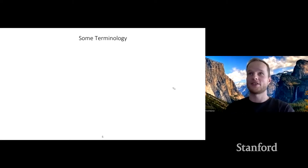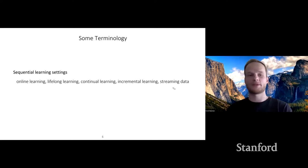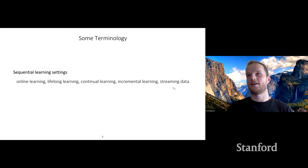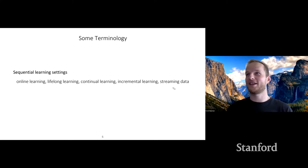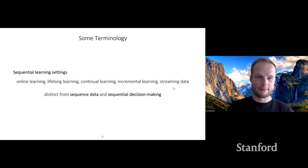Before the exercise, let me introduce some terminology. We'll be concerned with sequential learning settings, referred to with different names: online learning, lifelong learning, continual learning, incremental learning, and streaming data. They often mean slightly different things, so when reading papers it's important to understand the specific problem statement being solved. We'll assume all these terms refer to the same sequential learning setting.